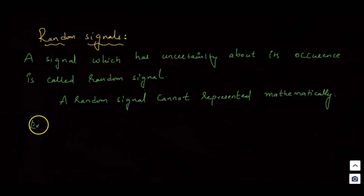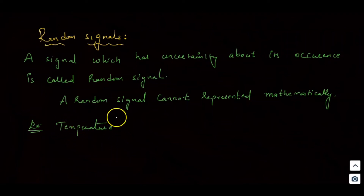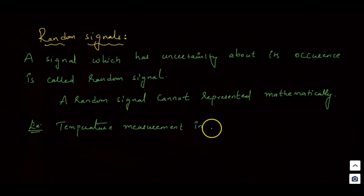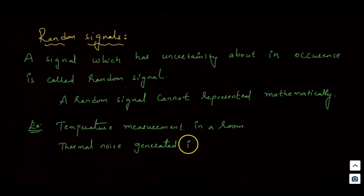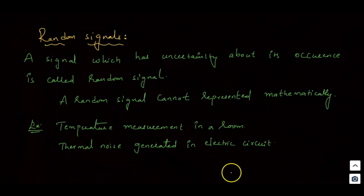For example, temperature measurement in a room, or thermal noise generated in an electric circuit — these are examples of random signals.